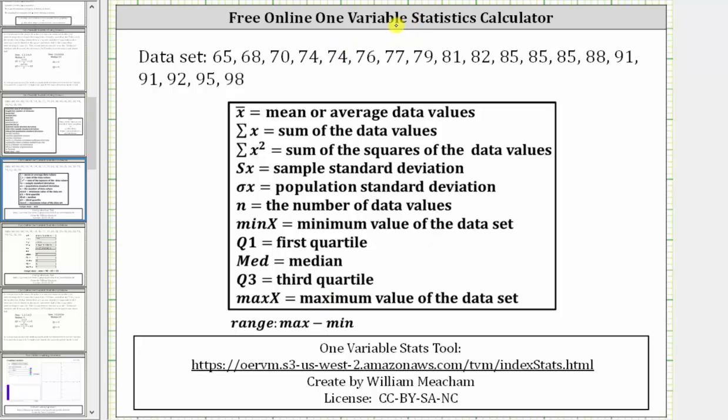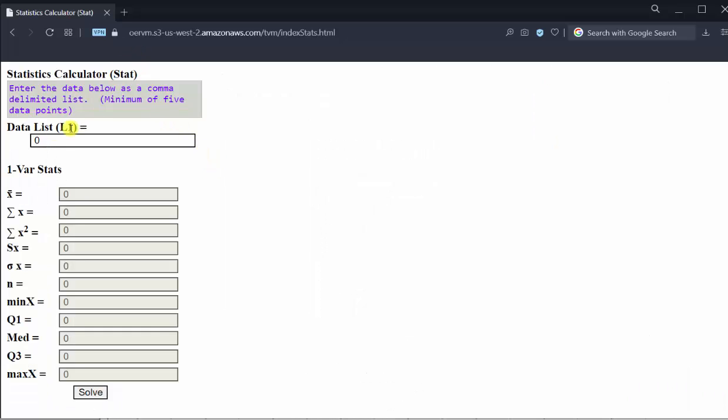So let's go to the free online one-variable stats calculator and enter the data. We enter the data in the data list cell separated by commas.